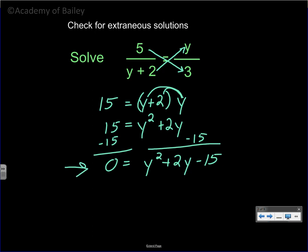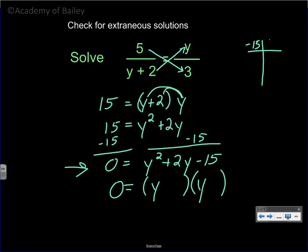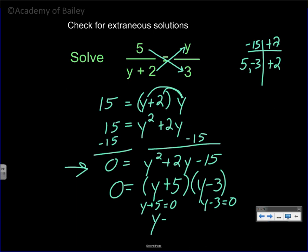Now since this is set equal to 0, we can split it up into two parentheses. There are two numbers that multiply to get negative 15 that add up to get positive 2. Those two numbers are going to be 5 and 3 in some combination. Since it's a positive 2, the 5 has to be positive and the 3 will be negative — so we say positive 5, negative 3. Set each one of these parentheses equal to 0, and y is equal to negative 5 and y is equal to 3.